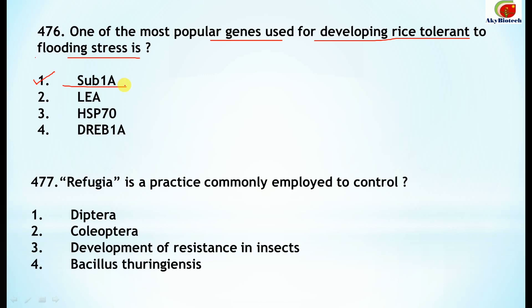Question 477: refugia is a practice commonly employed to control the development of resistance in insects.